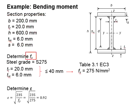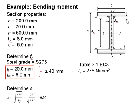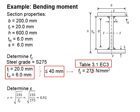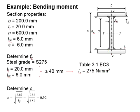First, you need to determine Fy. The steel grade is 275. The thickness of the flange and the web is 20 mm and 6 mm respectively. Both are less than 40 mm, and in accordance with Table 3.1 in Eurocode, Fy is equal to 275 MPa. Epsilon is computed based on the formula and is equal to 0.92.